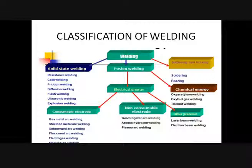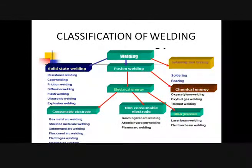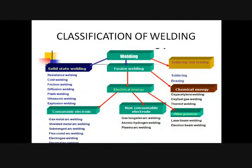Welding is classified into fusion and non-fusion. Under fusion welding, we have gas welding, arc welding, and chemical welding. In gas welding there are four subtypes: oxy-acetylene welding, acetylene C2H2 welding, oxy-H2 welding, and atomic hydrogen welding. In arc welding, you have AC/DC, tungsten inert gas (TIG) welding, metal inert gas (MIG) welding, and submerged arc welding. In chemical welding, there is thermit welding.